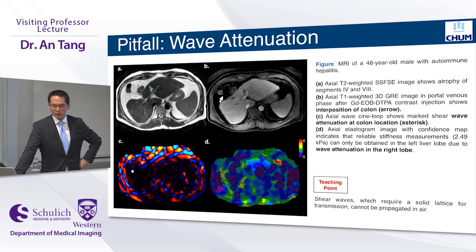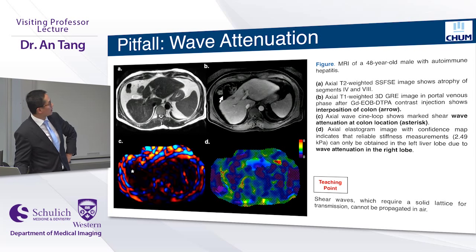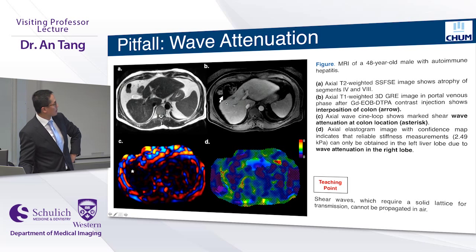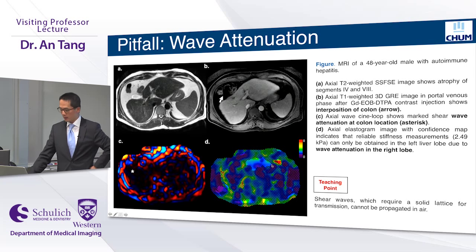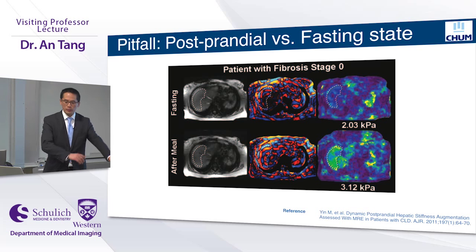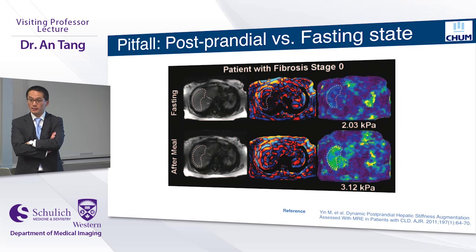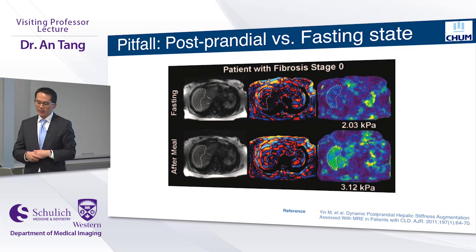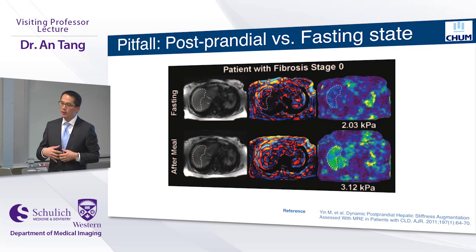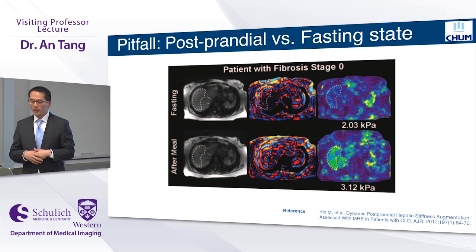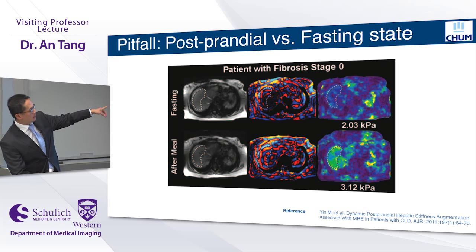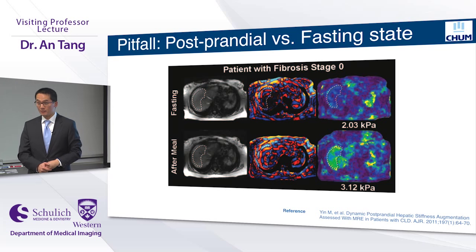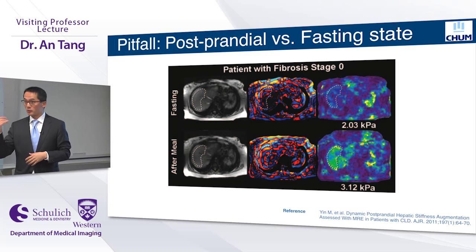A major biological pitfall is the postprandial versus fasting state. After a meal, increased splanchnic blood flow returning to the portal vein elevates hydrostatic pressure and can overestimate liver stiffness. For example, before and after a meal in the same patient, stiffness went from 2.0 kilopascals to 3.1 kilopascals — a risk of false positive diagnosis of fibrosis.